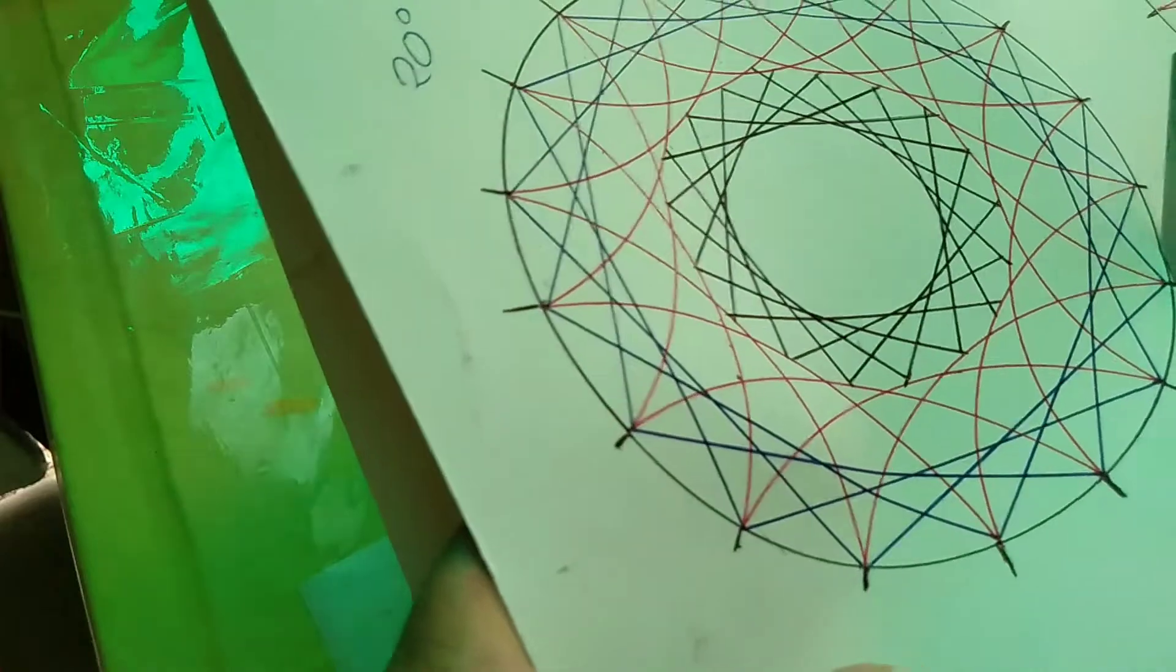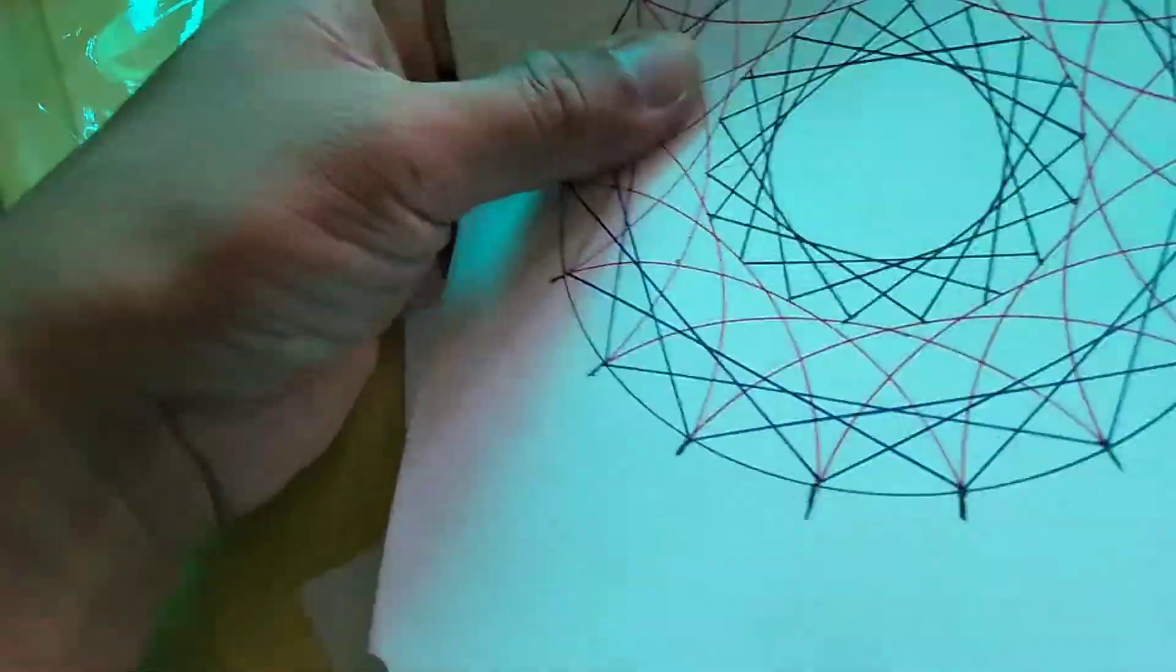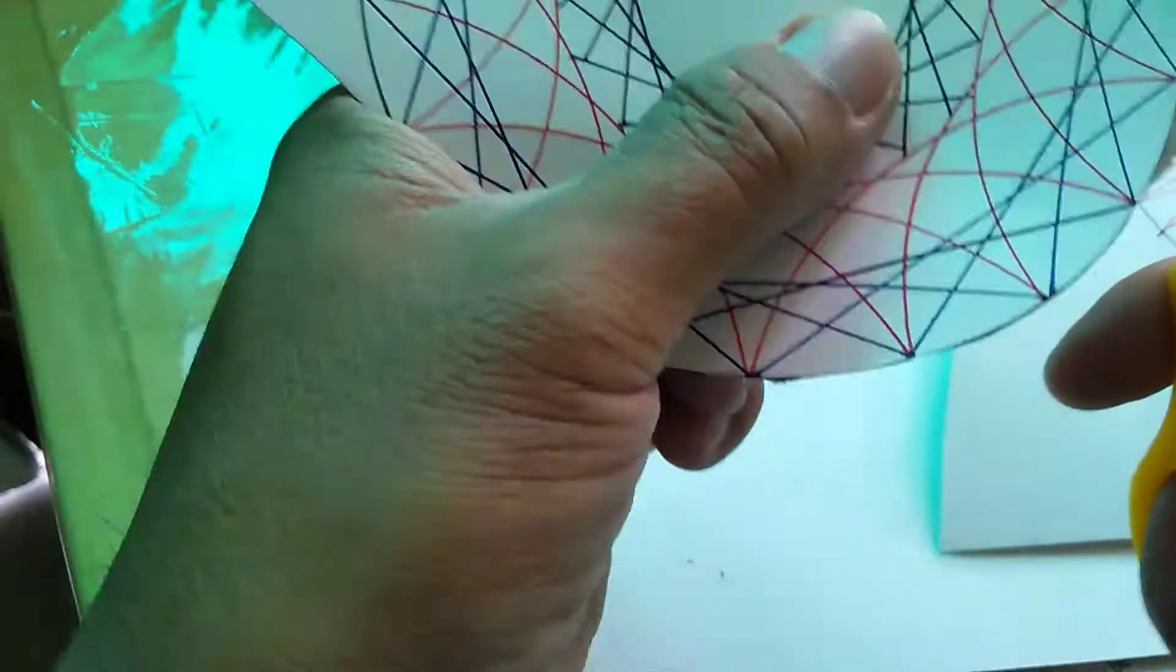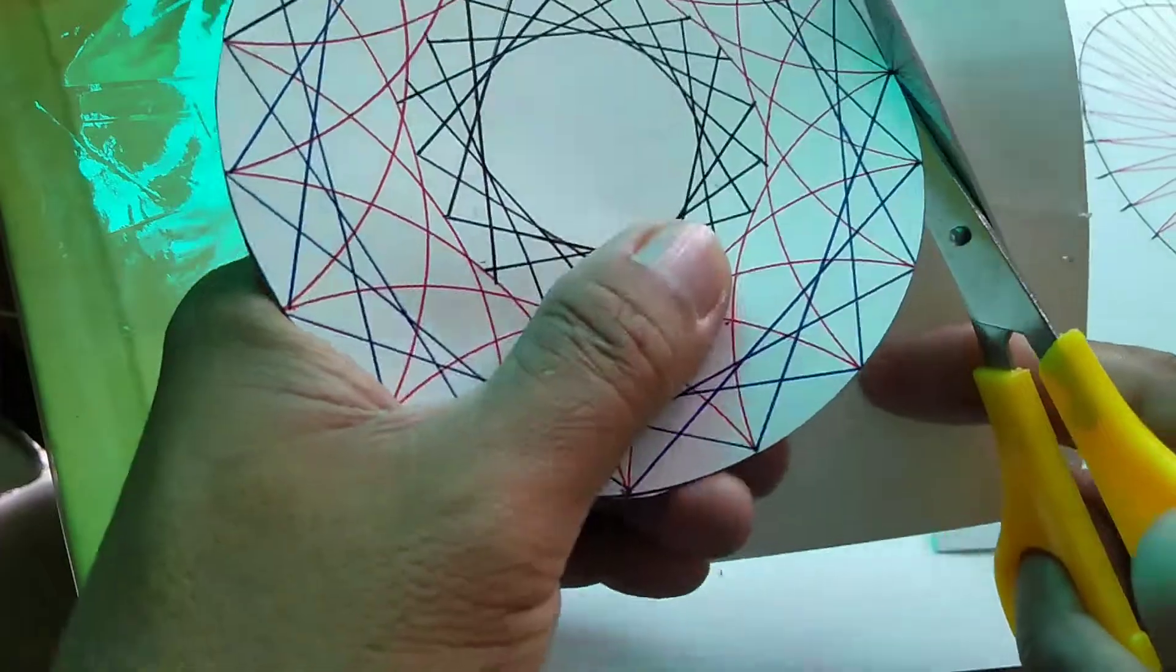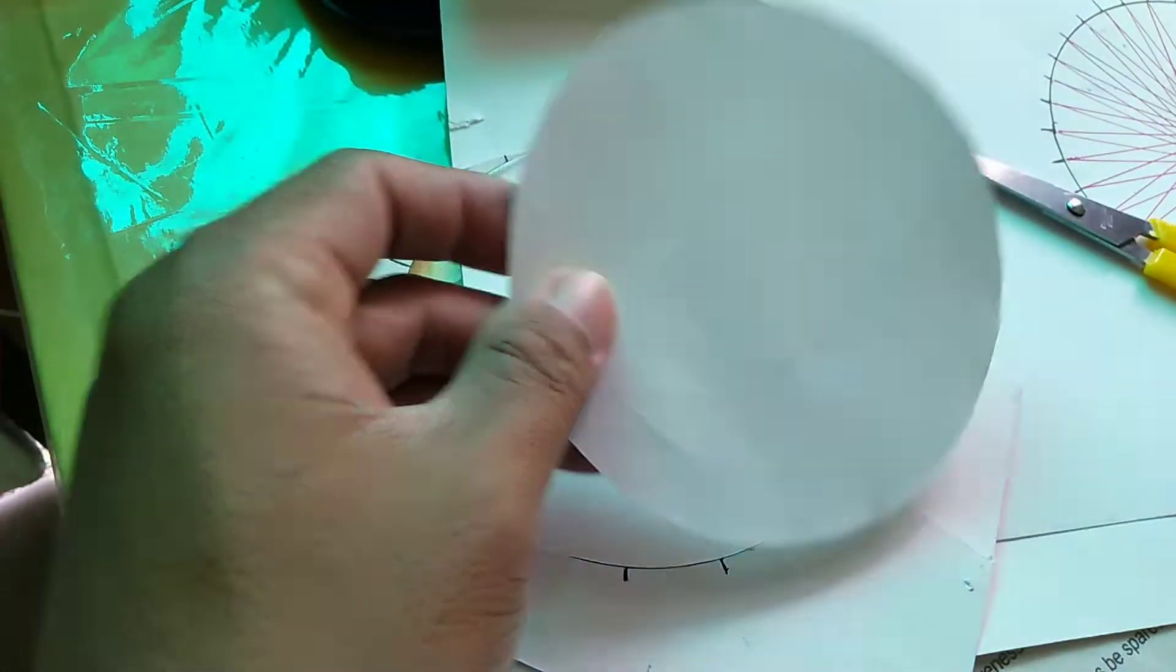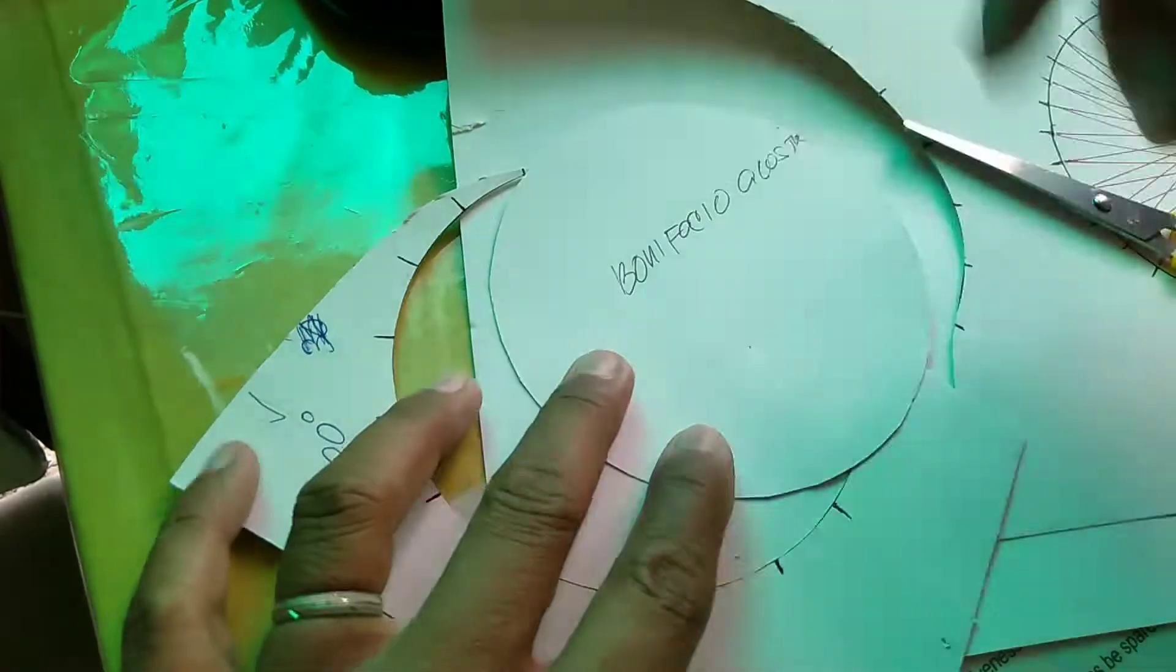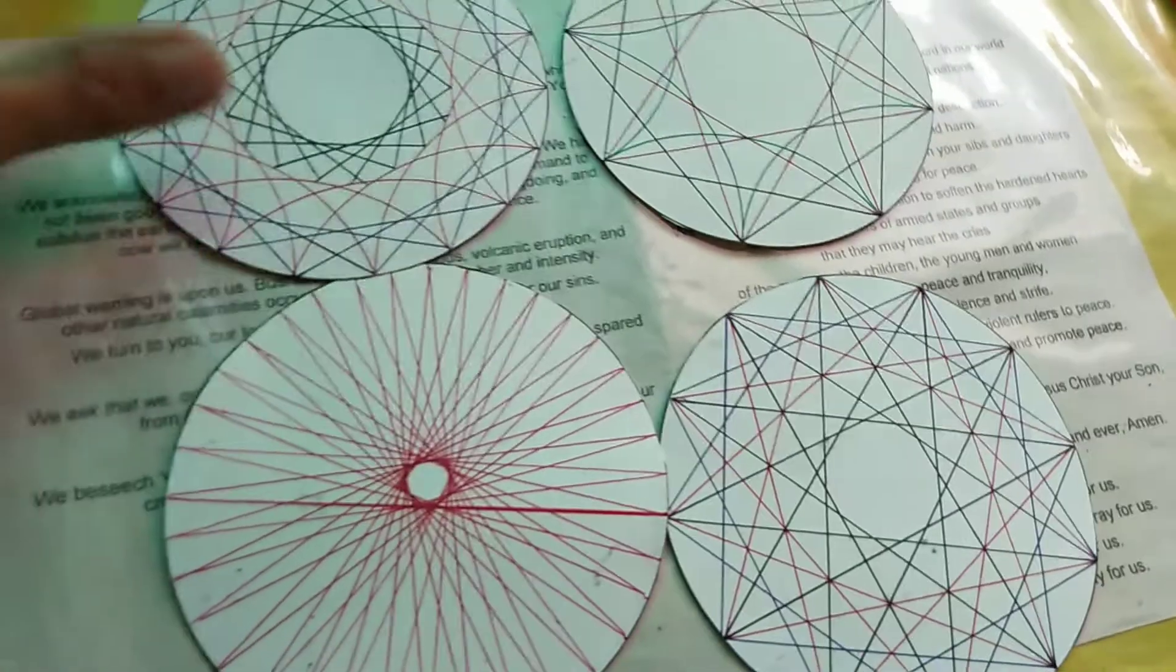Two hours later. Next, we're going to cut our drawing. This folder where we drew our lines, let's cut it to make our cyclic modulo circular. Just put your name on the back, how many degrees it is, and your section.